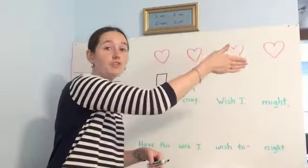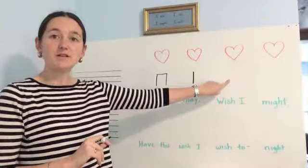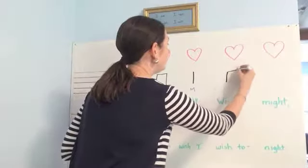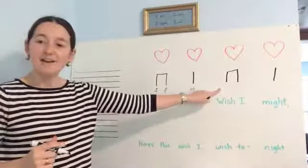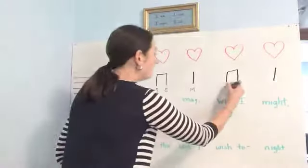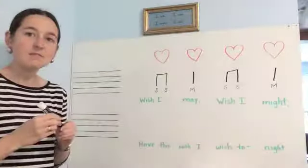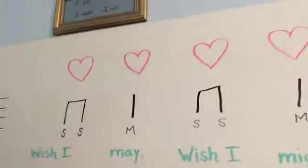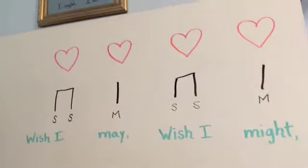Now we need to do "wish I might." So what's going to be here? That's another tee-tee-ta. Okay, another tee-tee-ta — so-so-me. Good job, Thomas. We have so-so-me. Hopefully you can see that. I may move it a bit so you can see it a little better. You can see that's a shortcut way of notating it, but now we're going to put it on the music staff over here.